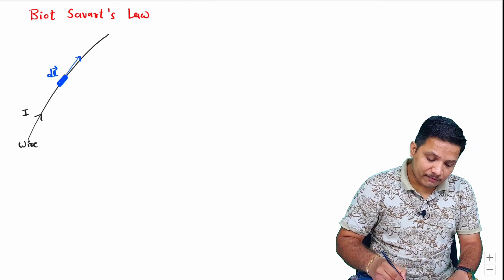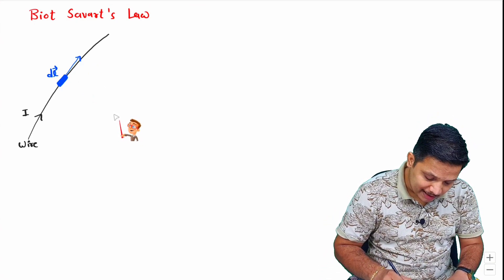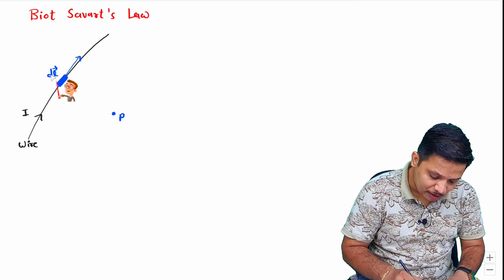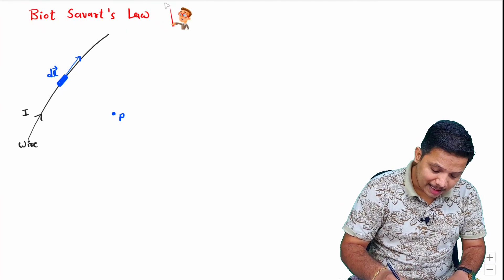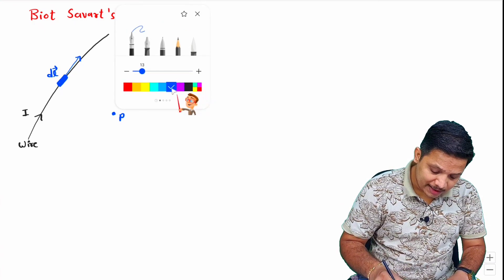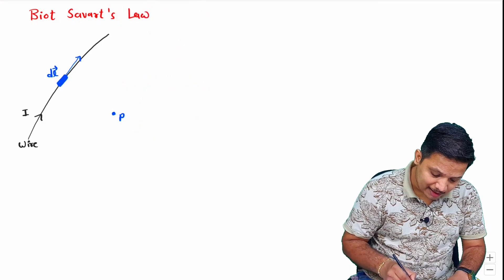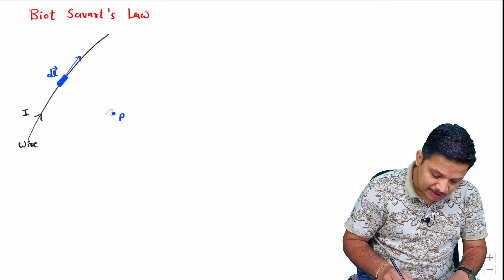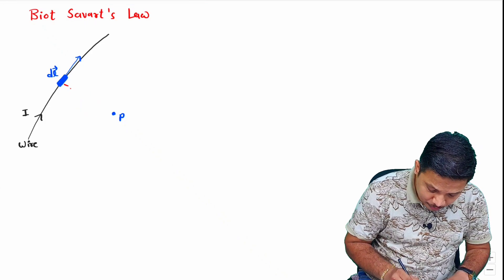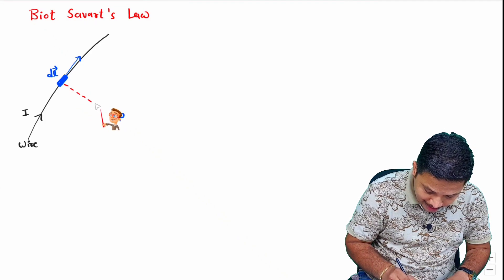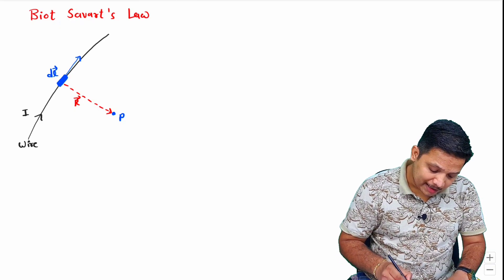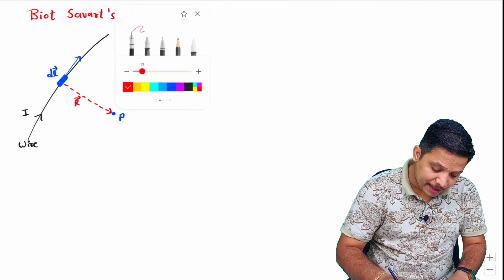If we want to measure the magnetic field intensity at point P due to this small differential length DL, then first we need the position vector of DL with respect to point P. Let us call this position vector R. Now we can identify the magnetic field intensity at point P.